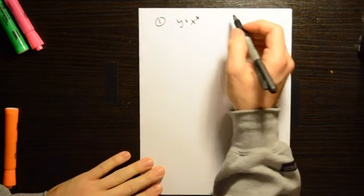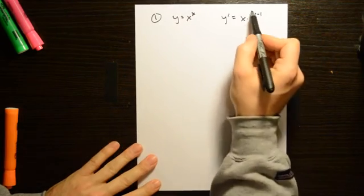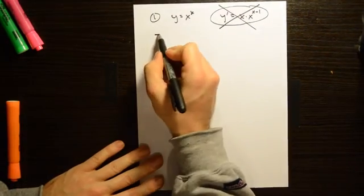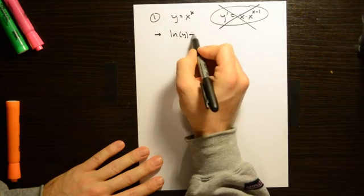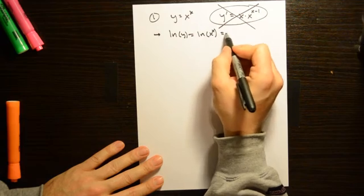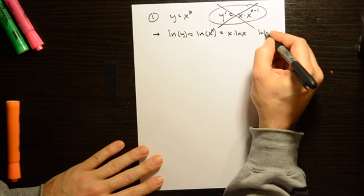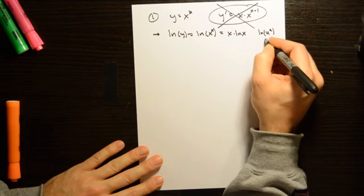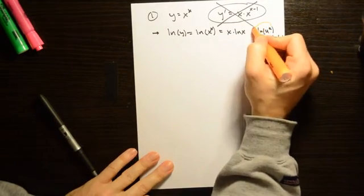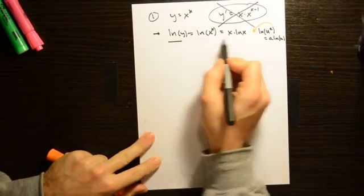For y equals x to the x, the worst possible mistake is to say y prime equals x times x to the x minus one — do not do that. What you have to do is take the natural log on both sides, giving ln(y) equals ln(x to the x), and then use the log rule to bring the exponent down in front: ln(y) equals x times the natural log of x. The rule is that ln(u to the a) equals a times ln(u).